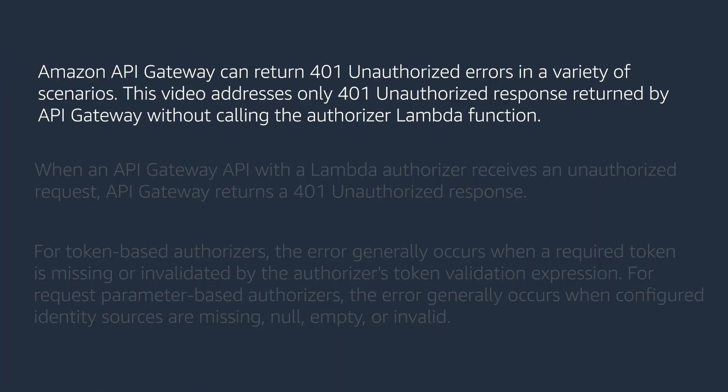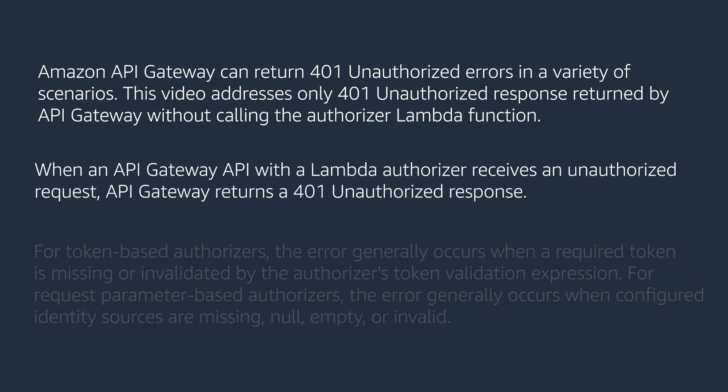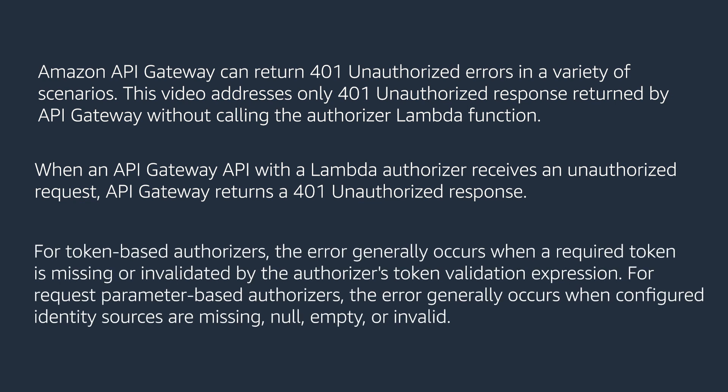Amazon API Gateway can return 401 unauthorized errors in a variety of scenarios. This video addresses only a 401 unauthorized response returned by API Gateway without calling the authorizer Lambda function. When an API Gateway API with a Lambda authorizer receives an unauthorized request, API Gateway returns a 401 unauthorized response. For token-based authorizers, the error generally occurs when a required token is missing or invalidated by the authorizer's token validation expression. For request parameter-based authorizers, the error generally occurs when configured identity sources are missing, null, empty, or invalid.